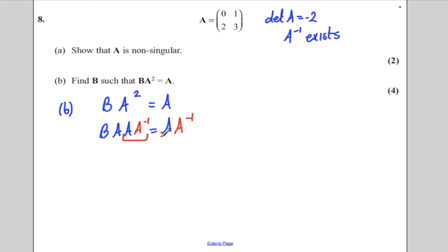You know A multiplied by A minus 1 is the identity. So this would be BA multiplied by the identity equals the identity. BA multiplied by the identity is BA, so BA equals the identity.